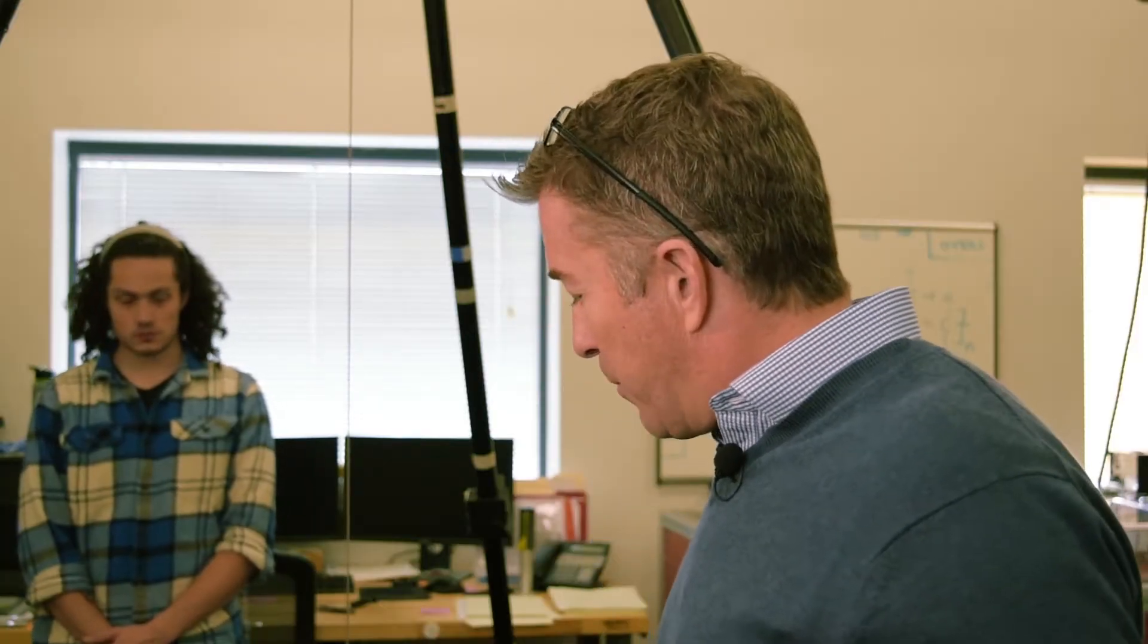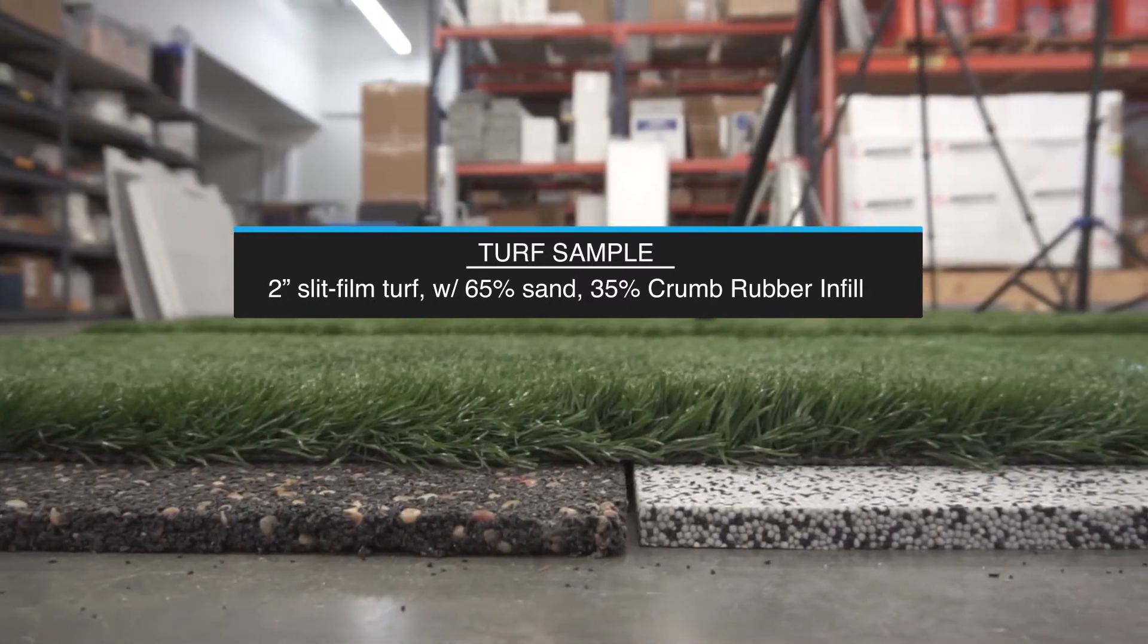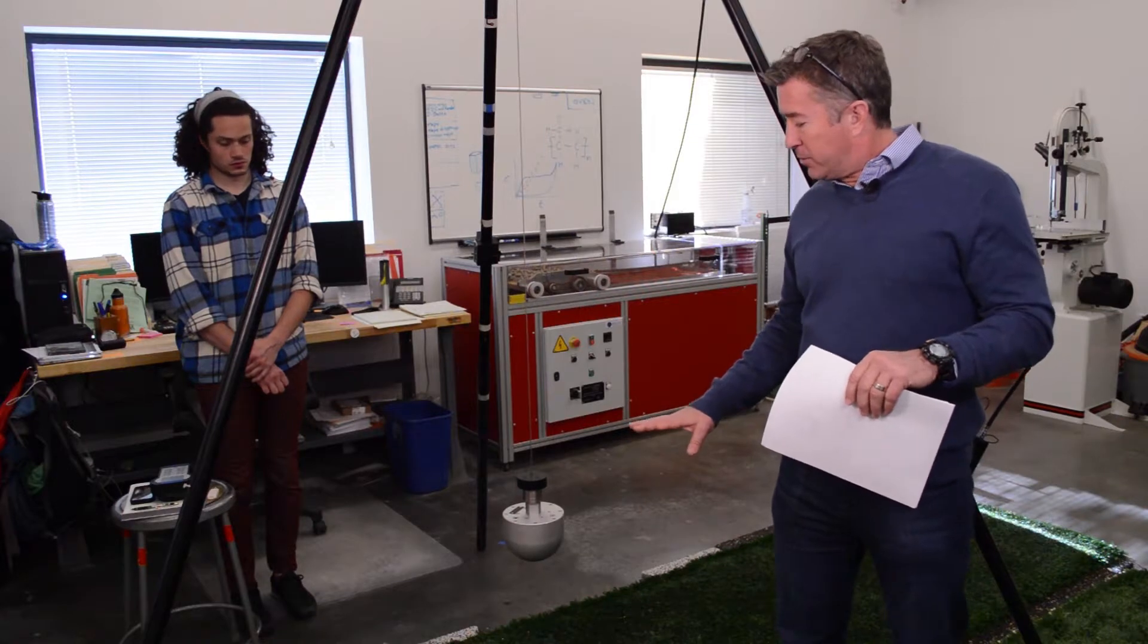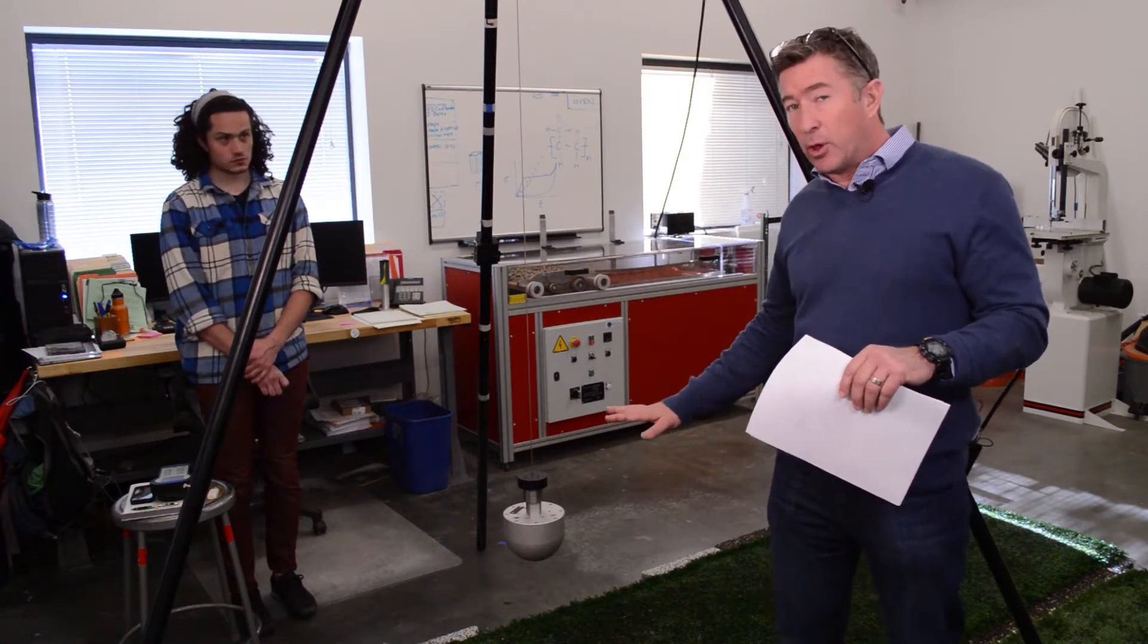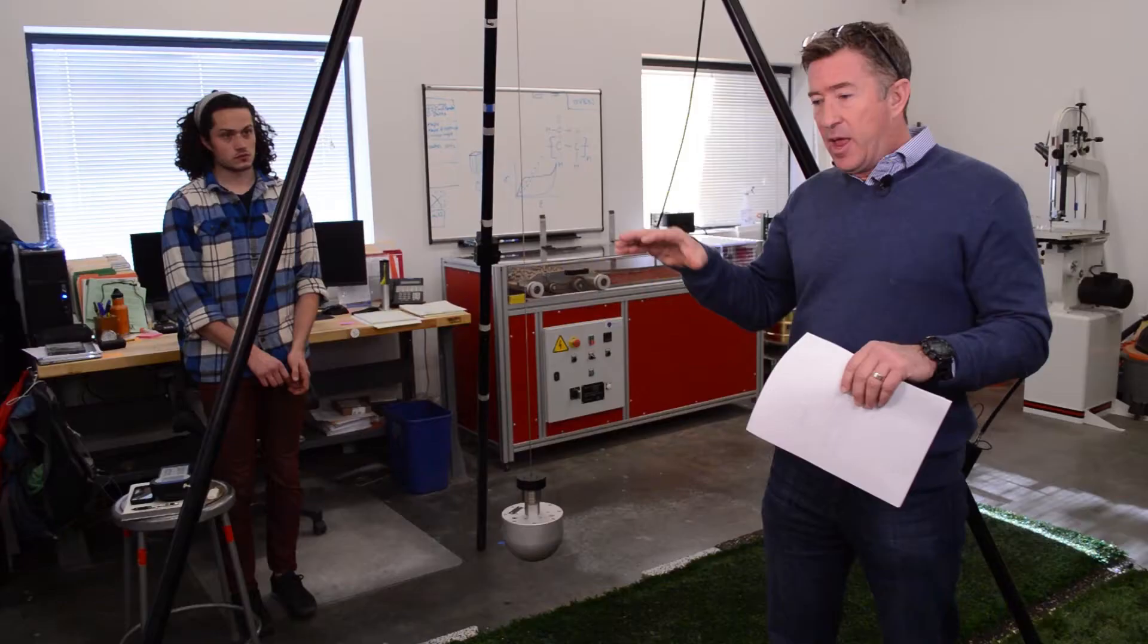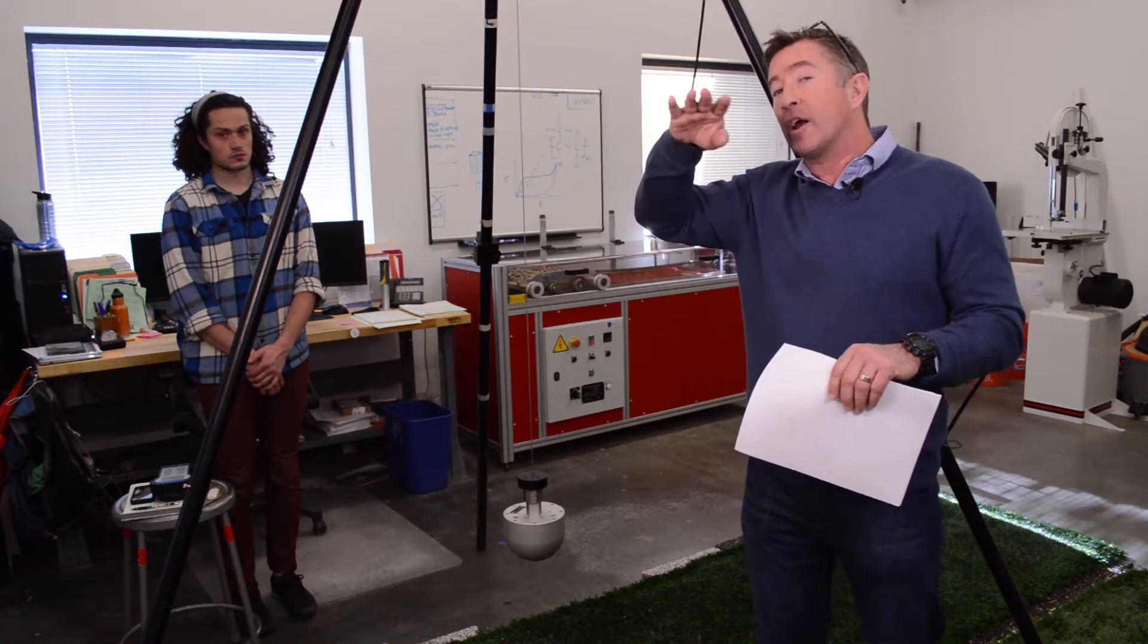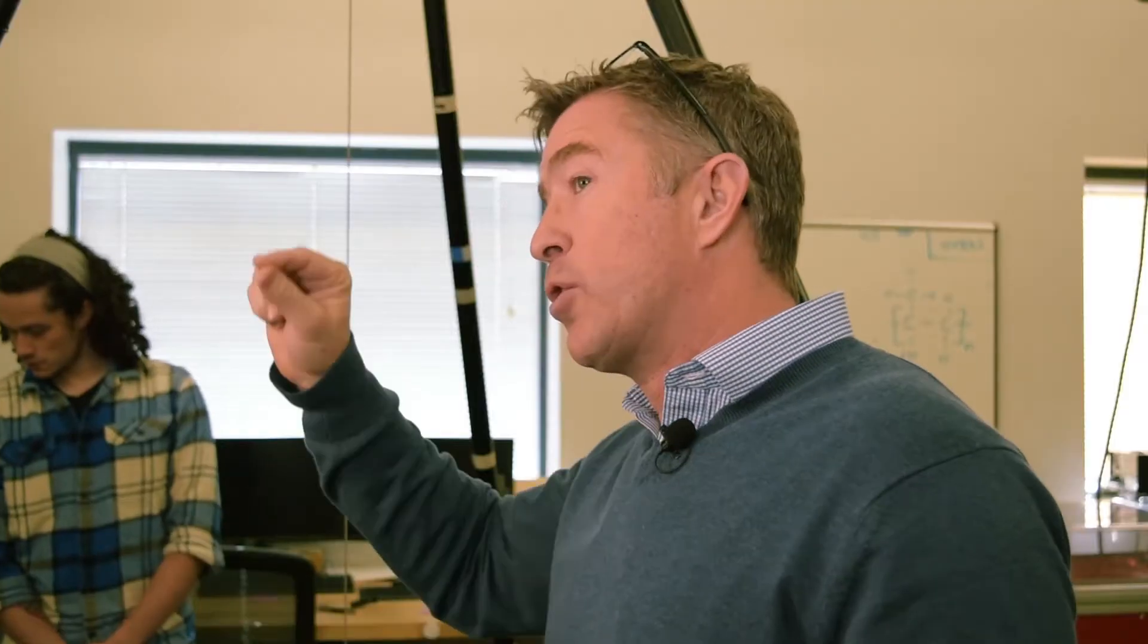What we're going to do is compare a turf system over different underlayments today. We have to drop it from different heights and need two impacts at least below 1,000 and two impacts above 1,000. Then we plot the curve of where those values are, and where that line crosses the 1,000 HIC gives us our critical fall height. That critical fall height, again, we want to be as high as possible.